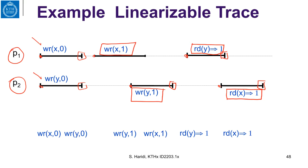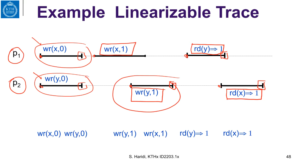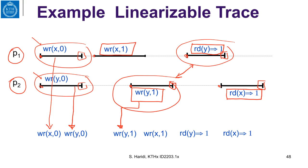Linearizability informally means obeying operation precedence and putting operations in one line. We can place: first the write of X to 0, then the write of Y to 0, then Y written to 1, then X written to 1. Now the read of Y returns 1 and the read of X returns 1. So this execution is linearizable.